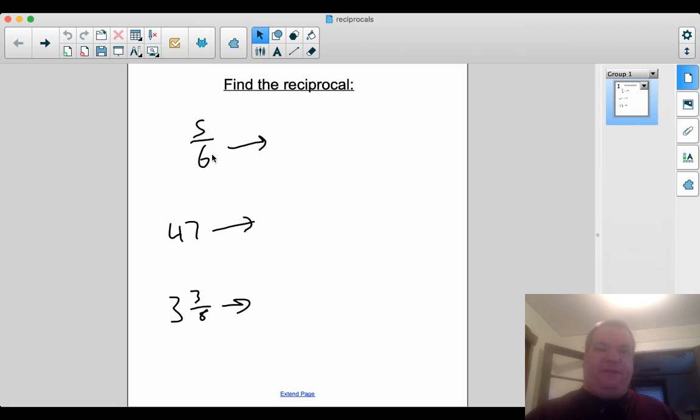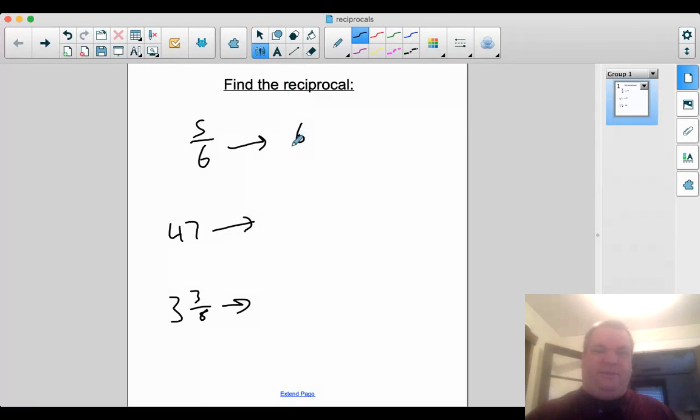So 5/6, I got a fraction, pretty straightforward. If you have a fraction, all you got to do is switch the top and bottom. So the reciprocal of 5/6 is going to be 6/5.